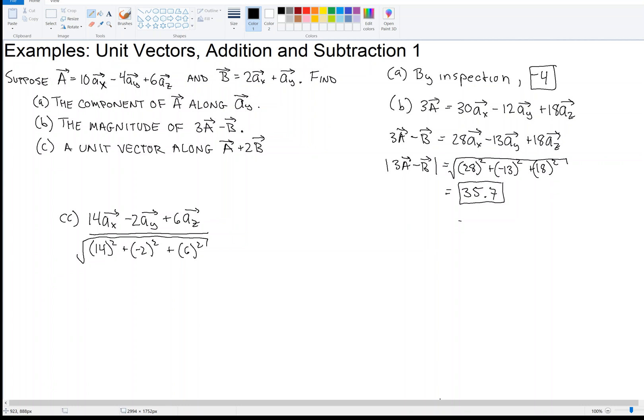So that square root then, and so we take 14 over that square root, and we take minus 2 over that square root, and we take 6 over that square root, and we keep 3 significant digits, and what do we get? We get 0.911 in the X direction, minus 0.130 in the Y direction, and 0.391 in the Z direction. And so that's it. That's our answer. Thank you.